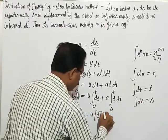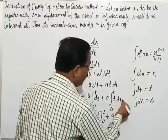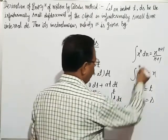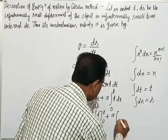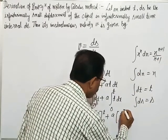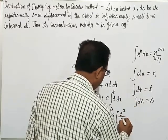For the integration of t dt, applying the formula x^n → x^(n+1)/(n+1), we get t^(1+1)/(1+1) = t²/2.